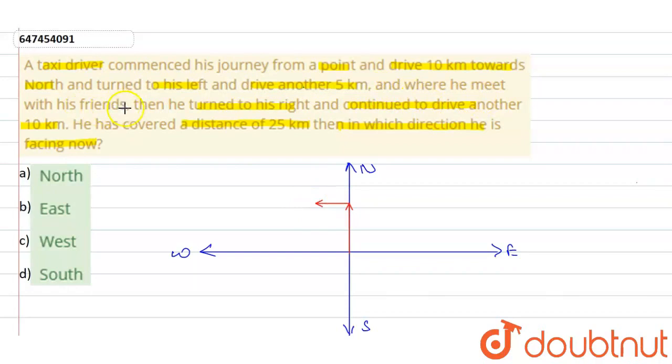And where he met with his friends and then turned to his right. वहां पर वो friends से मिलता है और right मुड़ता है. And continued to drive another 10 km. फिर यहां से 10 km चलता है.